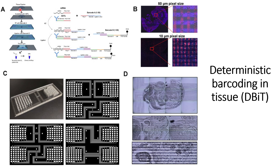First, they fix the tissue on a glass slide and after that they incubate it with this anti-DNA antibody that tags against the protein of interest. After that, they leave it at room temperature, barcode it with one kind of antibodies, and in the next step they barcode it with another kind of antibodies in the orthogonal directions.